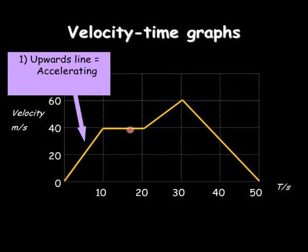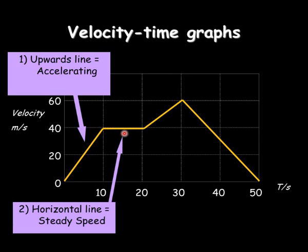A horizontal line here, on the other graph it meant stationary, but it now means it's going at a steady velocity of 40. So during this period here, it's travelling at a steady speed of 40 metres per second.